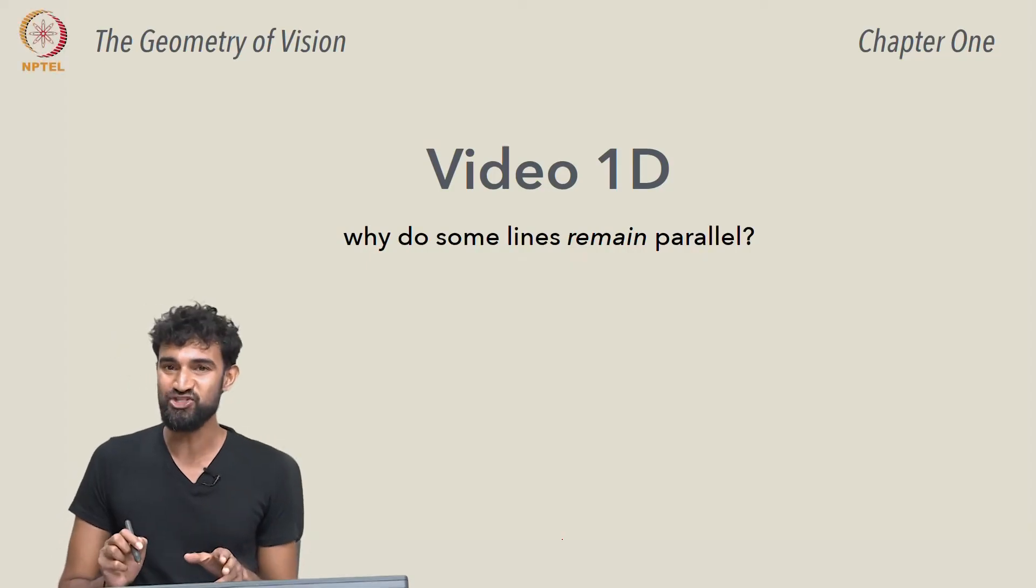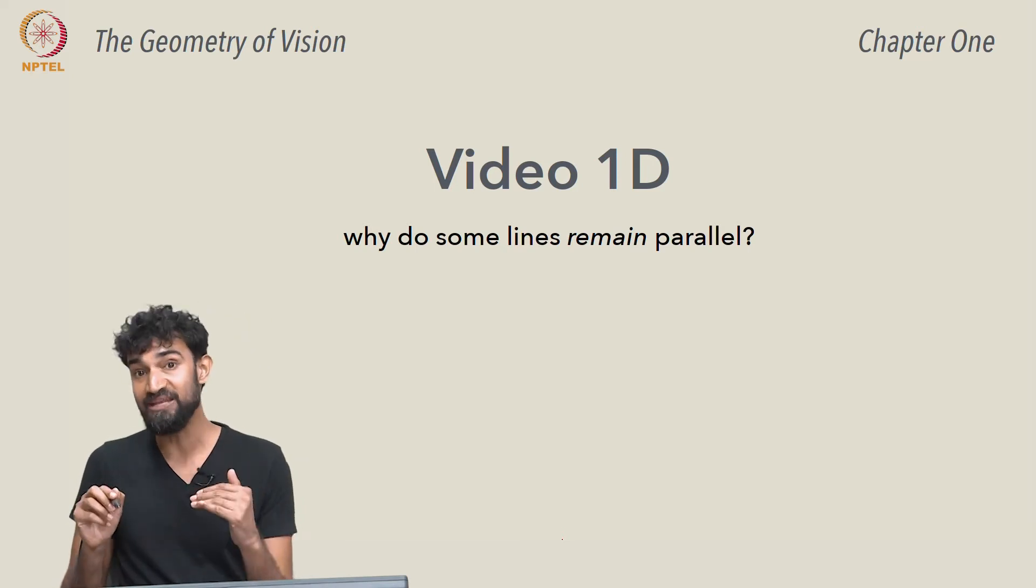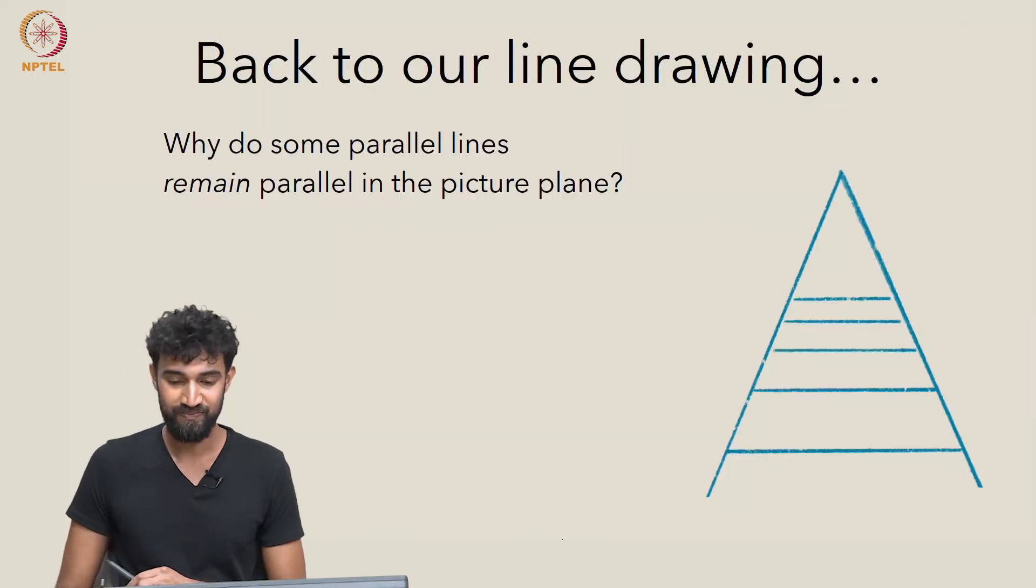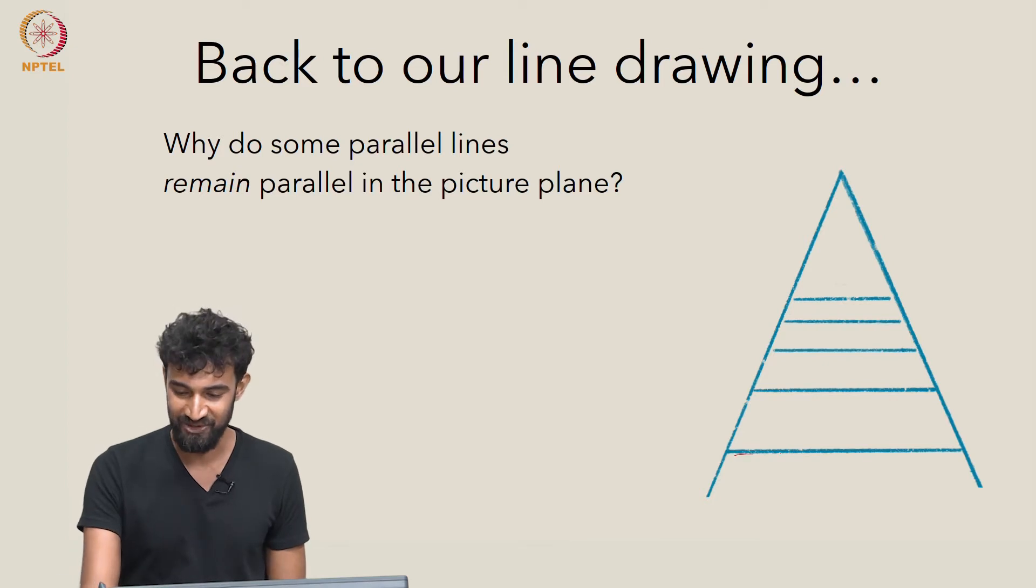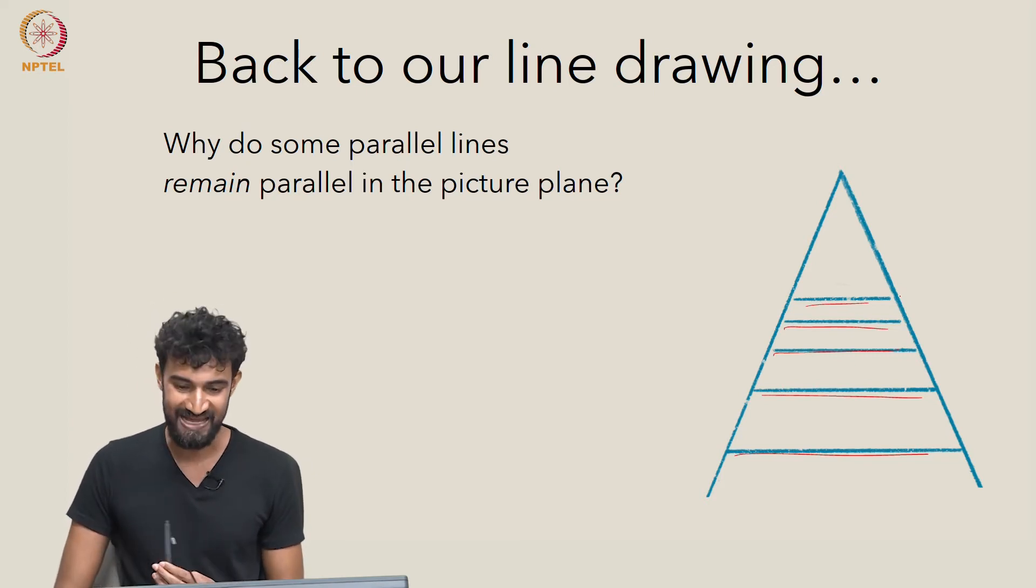Okay, finally, let's answer the last question that we raised, which is: why do some lines remain parallel in their image? In particular, I'm talking about these horizontal side rails. They were parallel in real life, and their images are parallel in the picture plane. So why is that?